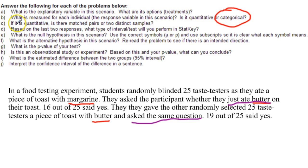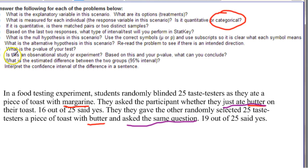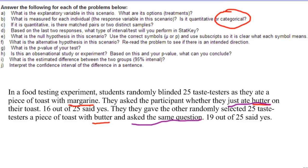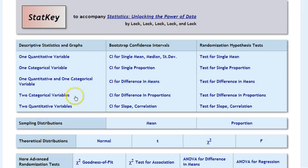Part C here says if it is quantitative and it is not. So we are going to skip that one. Based on the last two responses what type of interval or test will you perform in StatKey? Well whenever you have a categorical response we are going to perform a difference of two proportions. So it is either going to be a test of the difference of two proportions or a confidence interval for the difference of two proportions.